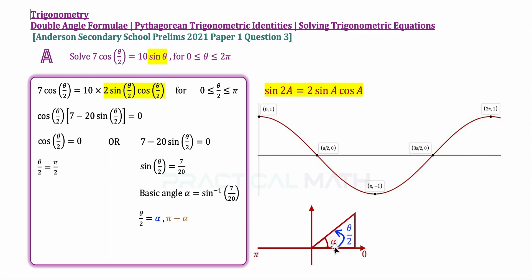This is theta over 2 in the first quadrant. To describe this angle, it's simply alpha. To describe the second quadrant's angle, the angle goes here, this is your theta over 2. Your alpha is over here. How do we describe this angle of theta over 2? We can describe it as π minus alpha. So theta over 2 will be π minus alpha as well as alpha.